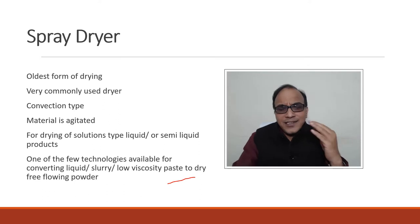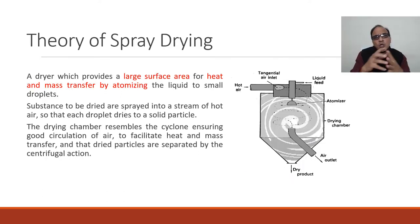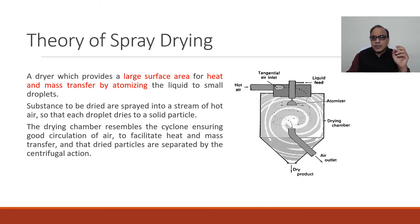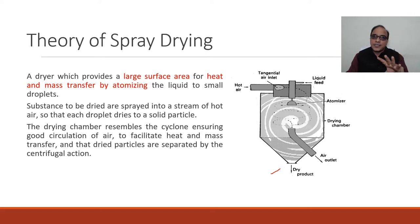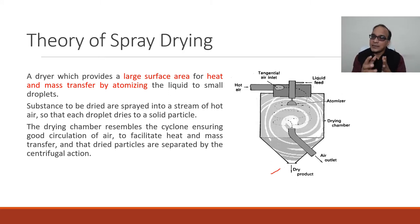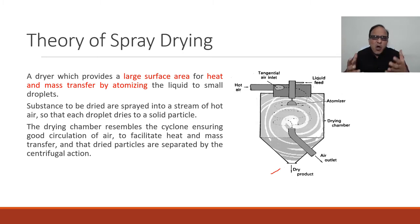Now let's move to the theory of spray drying. This is a simple diagram showing what the dryer means. Hot air is introduced, and it is a dryer which provides a large surface area for heat and mass transfer by atomizing the liquid to small droplets. The basic principle is that we are atomizing the liquid into small droplet form, providing high surface area, and that is why the drying is very effective here.